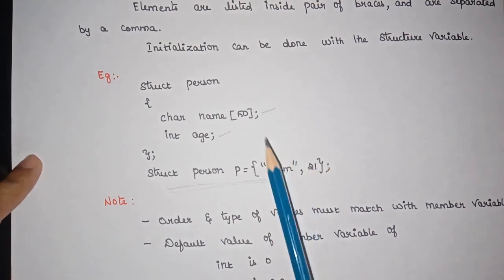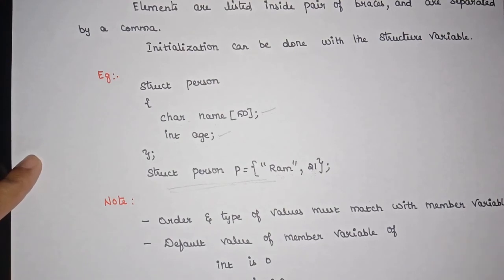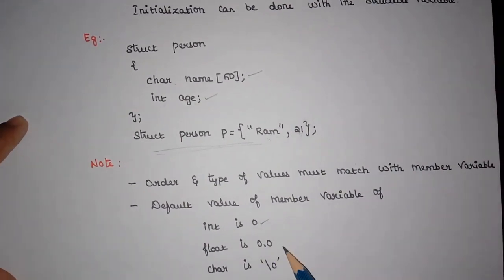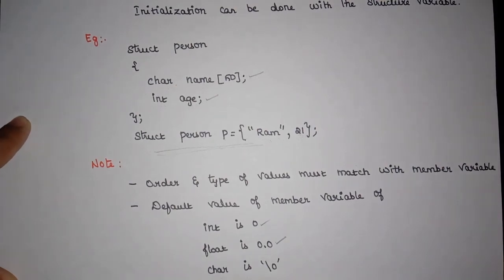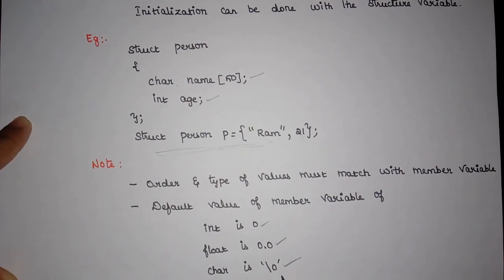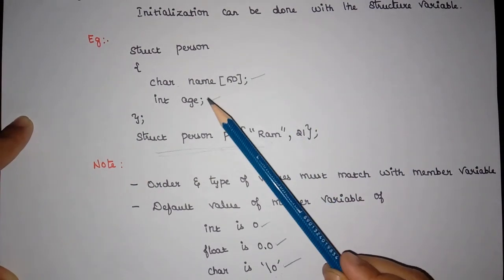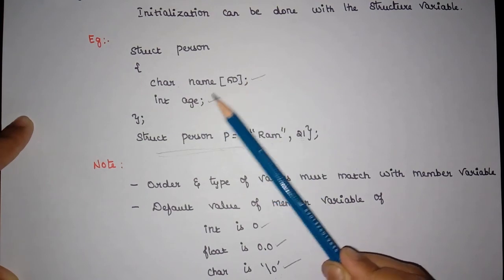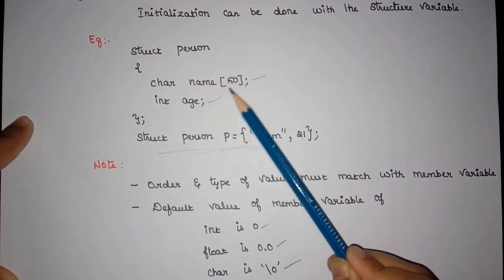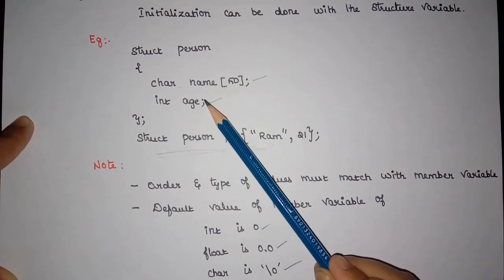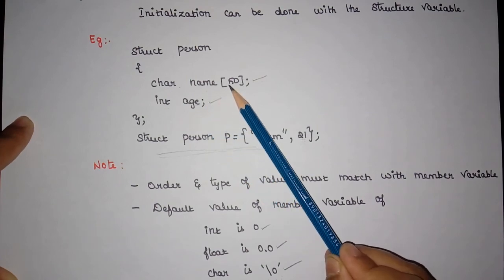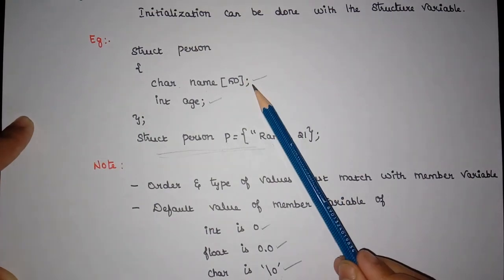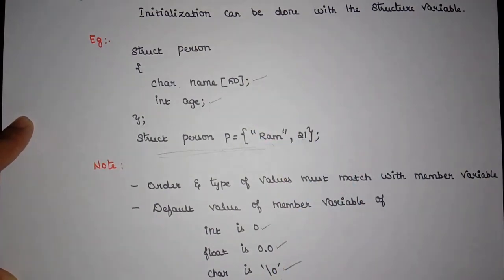The second point to note is the default values of member variables. For integer type data, the default value is 0. For floating type data, the default value is 0.0. For character type data, the default value assigned will be the null character, represented as '\0'. If you do not initialize a variable, these default values will be automatically assigned.